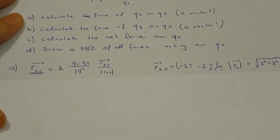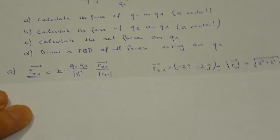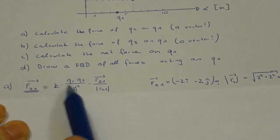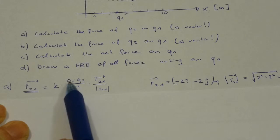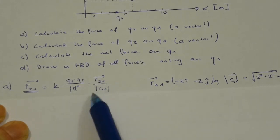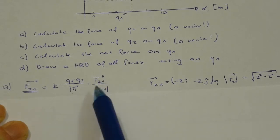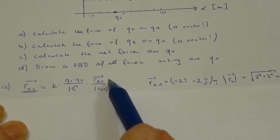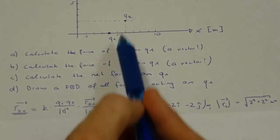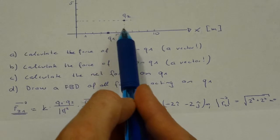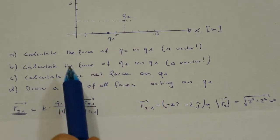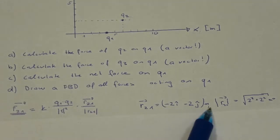So let's start with A. If we want to use the formula: electrostatic constant times the two charges divided by distance squared, multiplied by the unit vector in the direction from q2 to q1, we need this vector. If you look here, from q2 to q1 it is minus 2 in x-direction, minus 2 in y-direction, so minus 2i minus 2j meters.